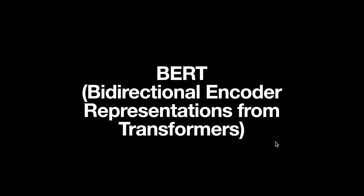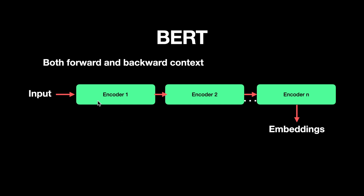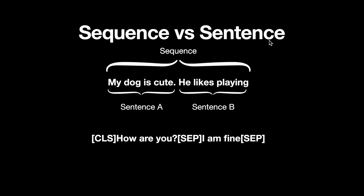That problem is addressed by Bidirectional Encoder Representations from Transformers — BERT. BERT is the transformer encoder stacked together in sequence. The key difference is that BERT uses bidirectional self-attention while the vanilla transformer uses constrained self-attention where every token can only attend to its left context. A sequence is formed by combining two sentences separated by a SEP token, with a CLS token marking the start of each sample.